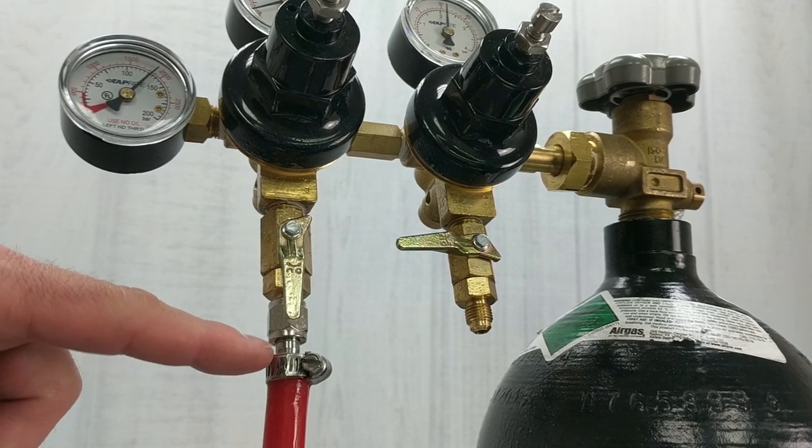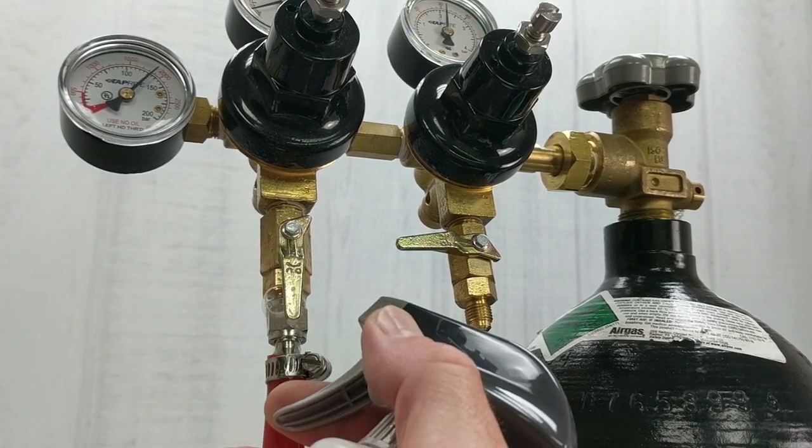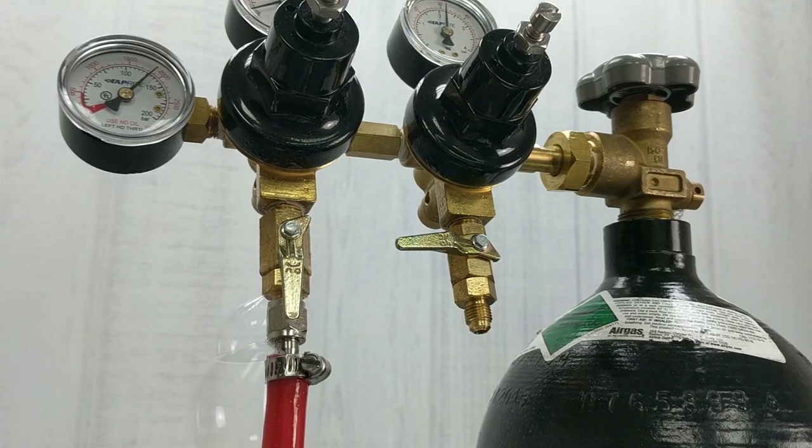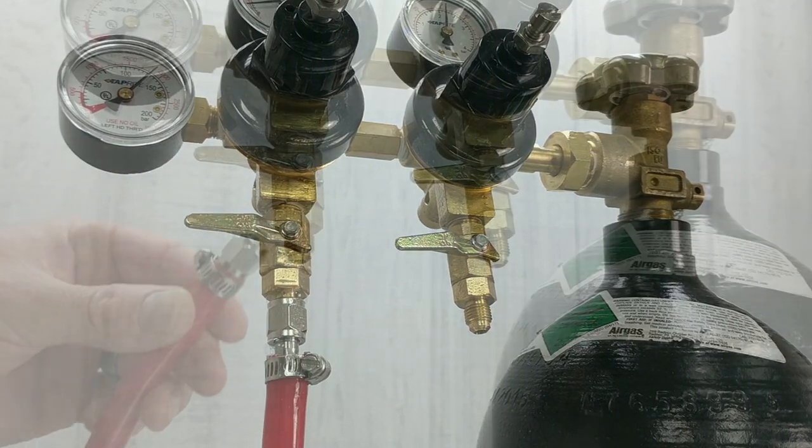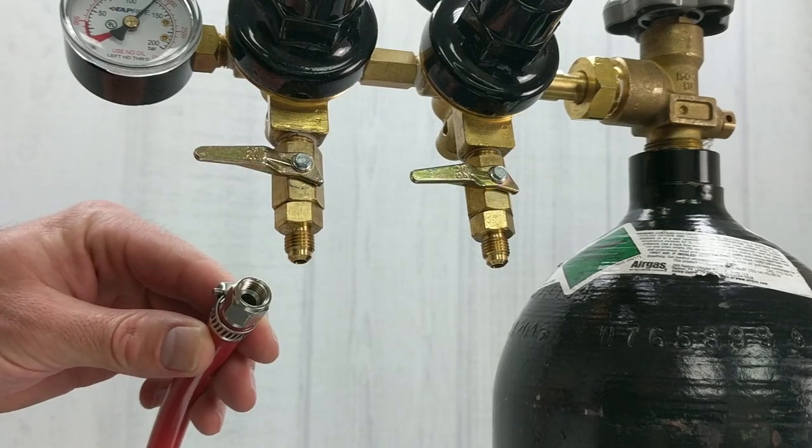Right away you'll notice bubbles forming right at the swivel nut here on the regulator. This is either because the swivel nut is not tight enough or there could be a minor flaw in the swivel nut where it's not allowing it to seal up well enough.